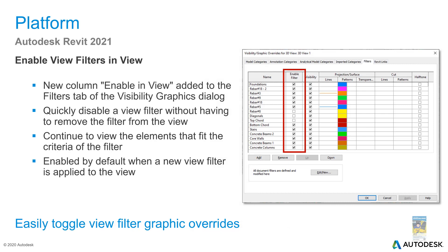They have created a column called 'enable filter' within the visibility graphics dialog box. This allows you to not only enable or disable a filter, but also keep the filter within that view — so you don't have to delete the filter if you don't need it temporarily.